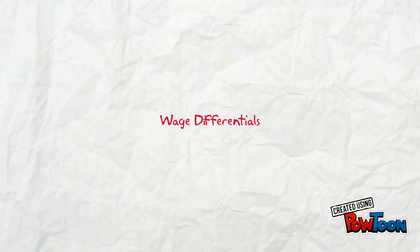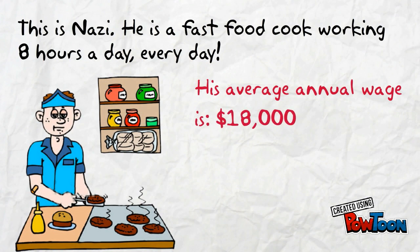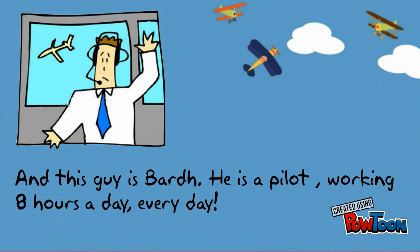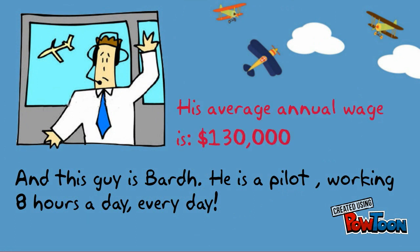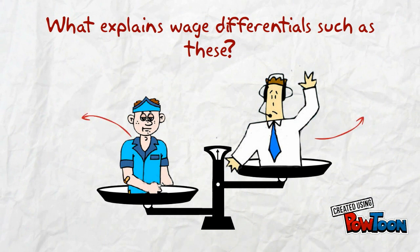This short movie explains which are the main factors that determine our hourly wage or annual salary, and why wages differ so greatly among different occupations. This guy is Nas and he is a fast food cook. He works 8 hours every day and earns $18,000 per year. This guy is Bard, who is an airplane pilot. He works the same schedule of hours but earns much more — $130,000 per year. Why do annual salaries differ so much between Nas and Bard? What explains those wage differentials?